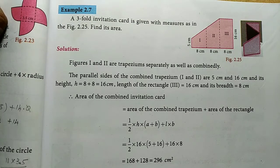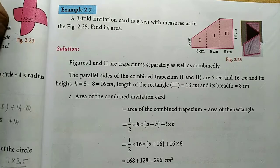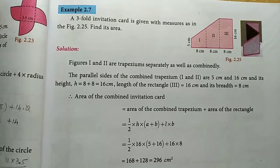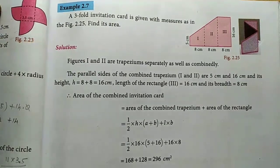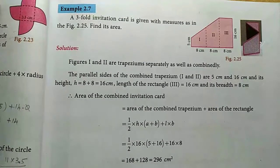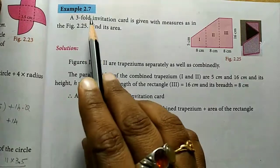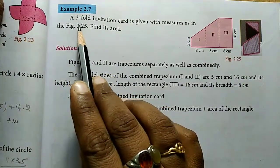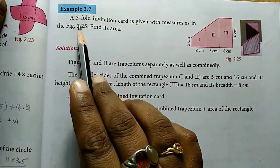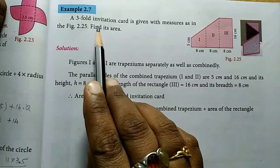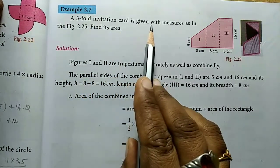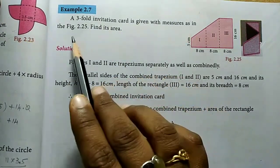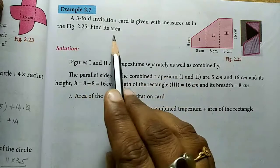Hello friends, welcome to VM Nutrition Channel. In our channel, 8th Standard Max Full Book Edition Chapter 2, Example 2.7: a 3-fold invitation card is given with measures as the figure — find its area.